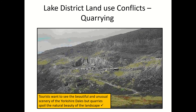On to our next land use: quarrying. Quarrying is when you dig natural resources out of the ground. This picture is actually from the Yorkshire Dales, but the Lake District does have quarries and they quarry slate there. Quarries spoil the natural beauty of the landscape — they're ugly. There are big scars on the landscape, and you can see the land isn't very green and lush; it's been scarred by that industrial land use.